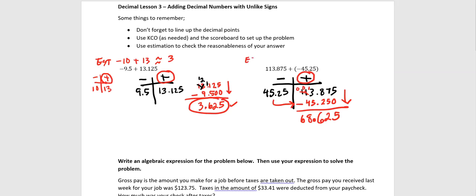So an estimate would be 113.875. How are we going to round that? Are we rounding up or are we rounding down? Well, that's more than a half. So we're going to round up. 114. Still plus. Negative 45.25. That's less than negative 45 and a half. So we're going to round down to negative 45.